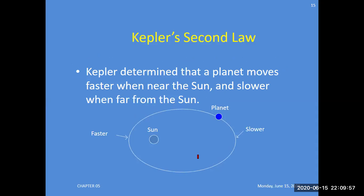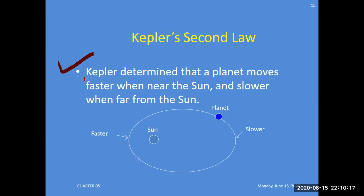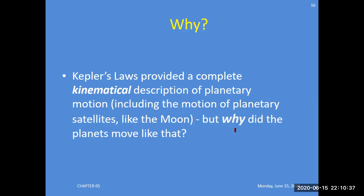Kepler's second law: Kepler determined that a planet moves faster when near the Sun and slower when far away from the Sun. This is the second law. The first one predicted the shape of the orbits; the second one describes where planets are slower and where they are faster. When a planet comes closer to the Sun, it becomes faster; when it moves away, it becomes slower.